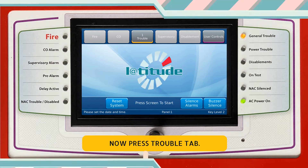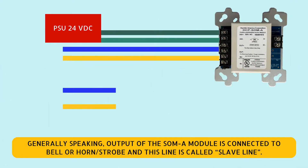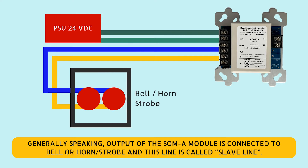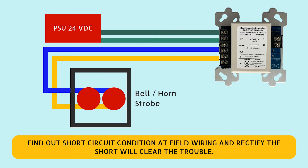Press the trouble tab. Trouble: Loop 1, Address 10.0 has a slave line short circuit, which is from the SOMA module. Generally speaking, the output of the SOMA module is connected to a bell or horn strobe, and this line is called the slave line. When there is a cable short between the positive and negative of the output slave line from the SOMA module, the panel will report a slave line short circuit trouble.